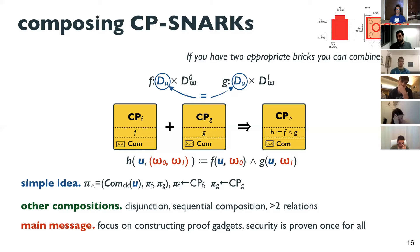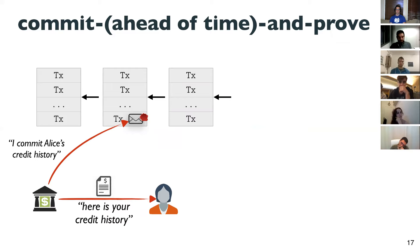A byproduct of using committed-proof SNARKs — particularly where the commitment is independent of the relation — is that it enables what we call committed-then-prove applications. For example, a bank commits to Alice's credit history and posts it on a blockchain.